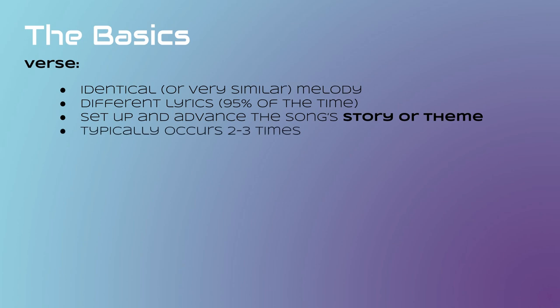Verses typically occur only two to three times within an average song. And when I get to the slides with the three structure formulas, you'll be able to see when verses usually appear and how they connect to the other sections. As for length, 8 or 16 bars are the most common formats for verses, but variations — sometimes even including an odd number of bars for a special effect — is not uncommon.